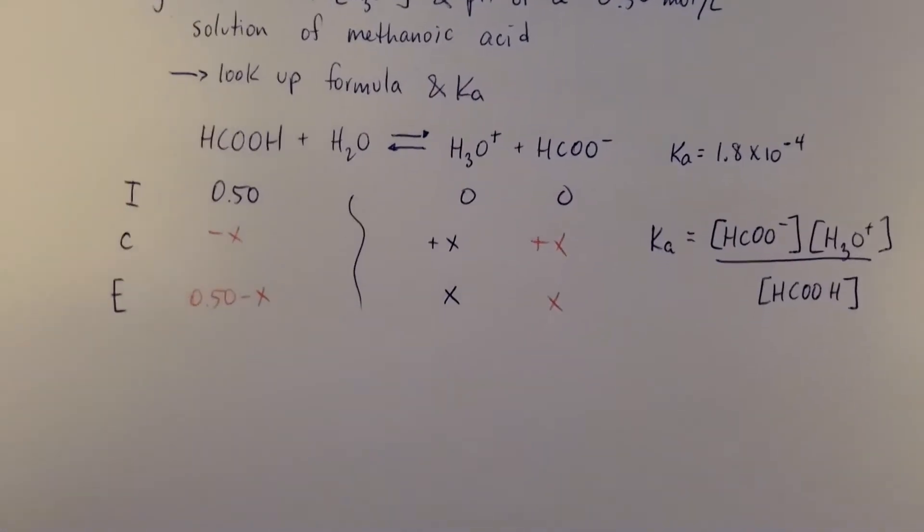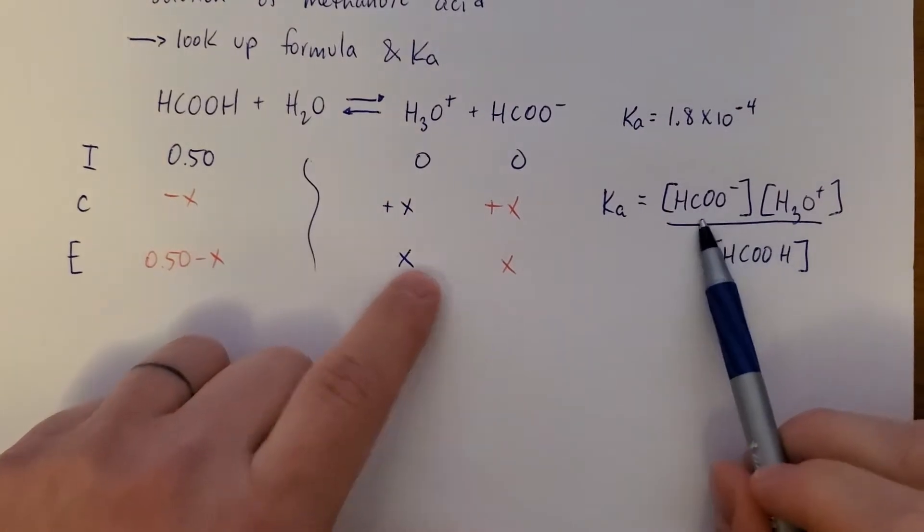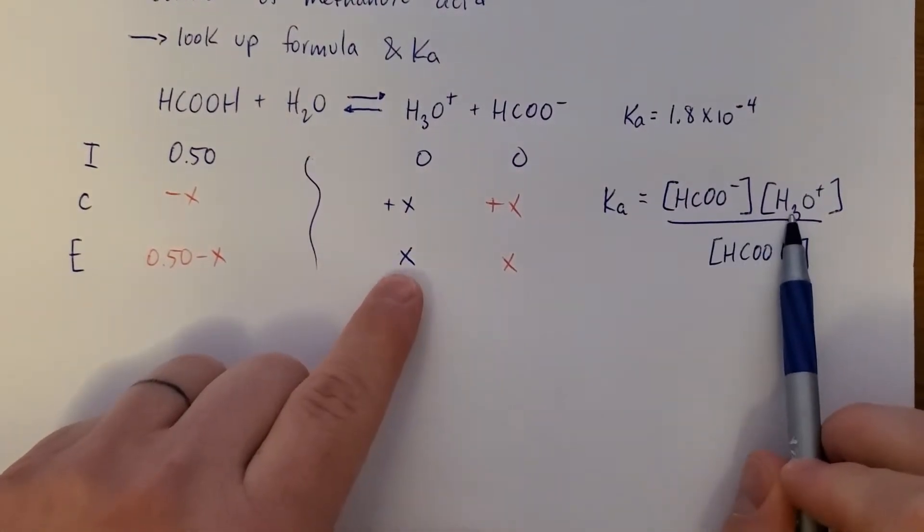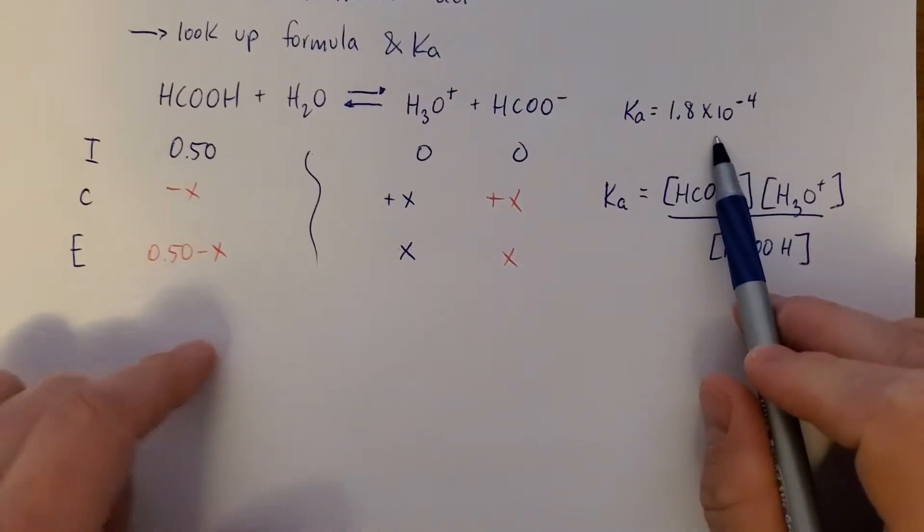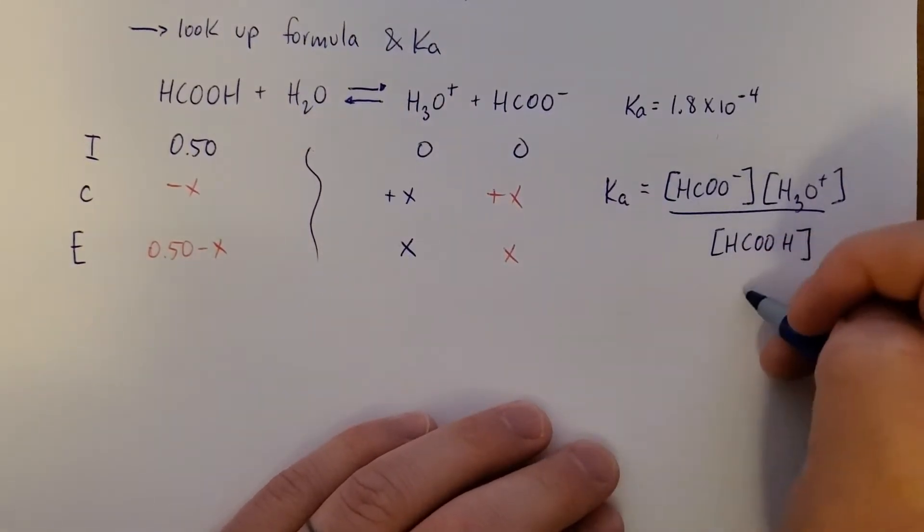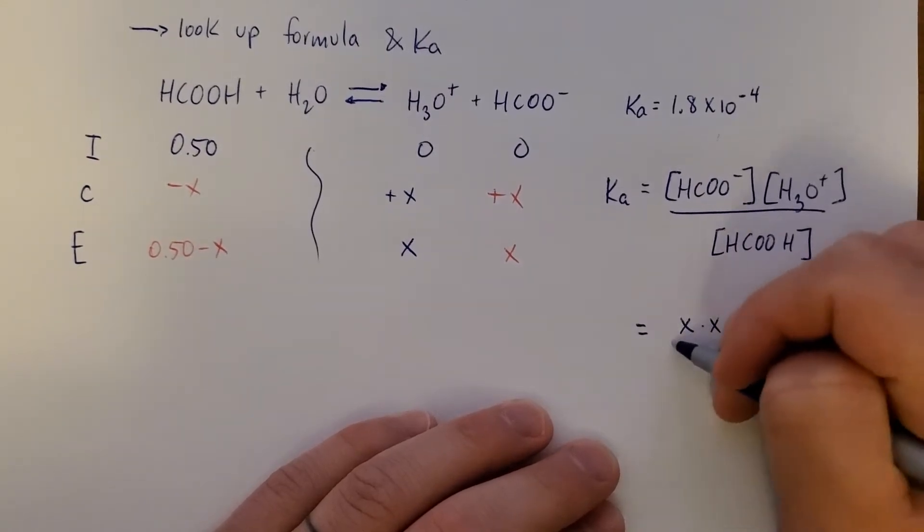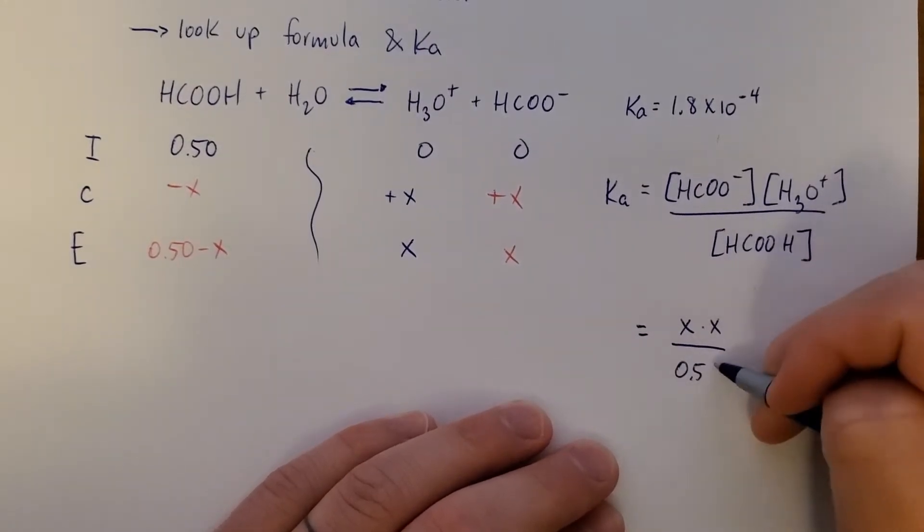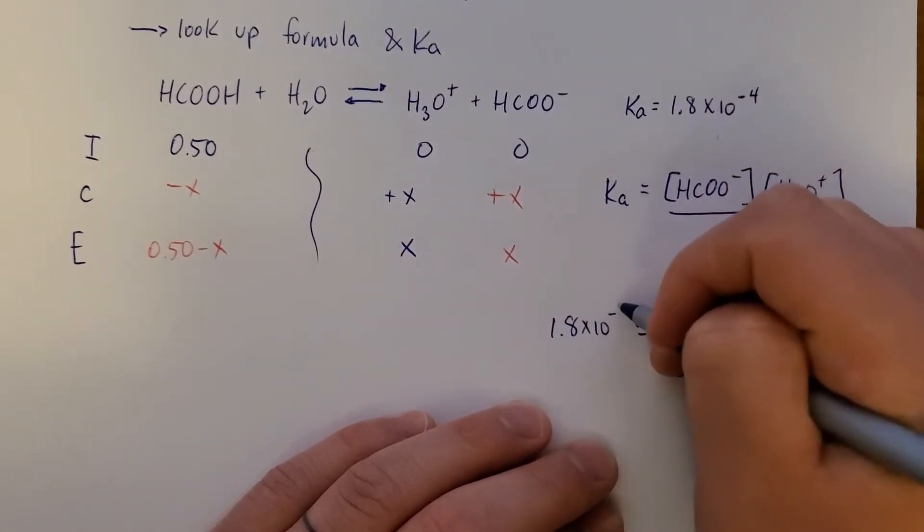And then we can say that this is X, this is X, this is 0.5 minus X. Got to equal that. All right. So let's say X times X over 0.5 minus X. The Ka value is this guy here.